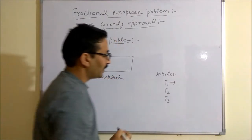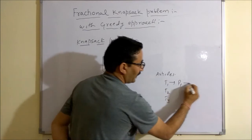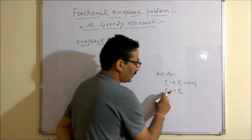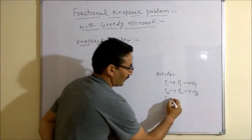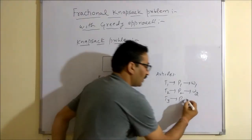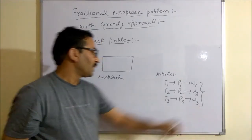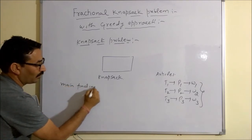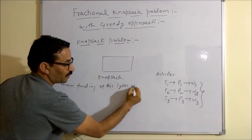Let's say P1 is the profit of T1 and W1 is the weight of T1. Similarly, P2 is the profit of T2 and W2 is the weight associated with T2. And P3 is the profit associated with T3 and W3 is the weight associated with T3.